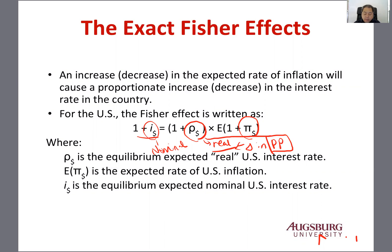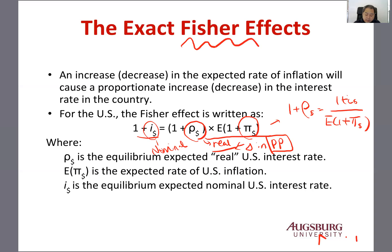So rho is the real rate and pi is inflation. If you rewrite this, 1 plus the real rate should be 1 plus the nominal rate divided by expected 1 plus inflation. That's called the Fisher effect — and that's the exact Fisher effect.